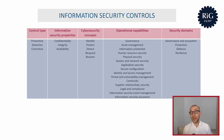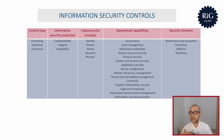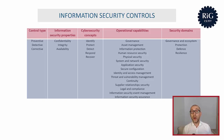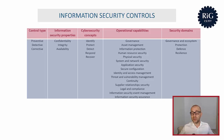This concludes the introductory part. From the next video, we will begin discussing the security controls in ISO 27002, following the structure of the standard — starting with the organizational controls. This is the first theme, containing 37 controls, the first of which is called Policies for Information Security.